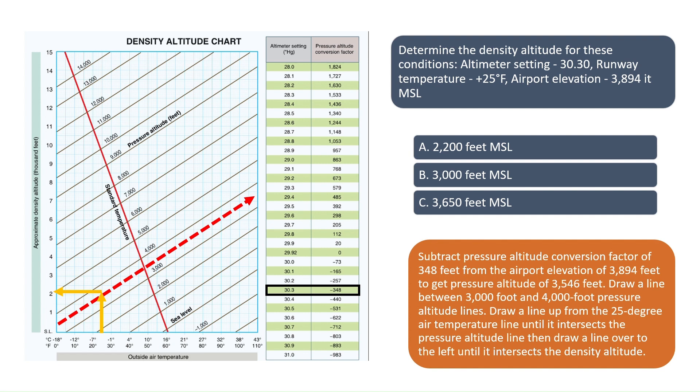Since the figures on the left of the chart are showing the approximate density altitude in thousands of feet, we can see the best answer to this question is 2,200 feet, since the orange arrow is pointing just above the 2,000 foot density altitude line on the left of the chart. The correct answer is A, 2,200 feet MSL.